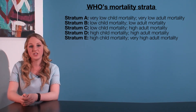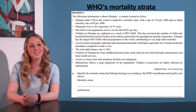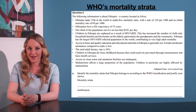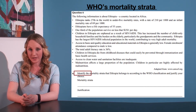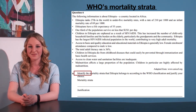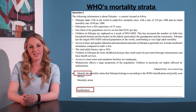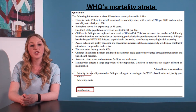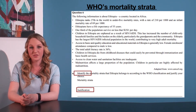A question on the mortality strata may look something like this one from the 2010 Vika exam. As you can see, the question has two parts. First, you need to identify the mortality stratum to which Ethiopia belongs based on the given information. Then, you need to justify that choice, again based on the given information. The question is worth three marks in total — one mark for the identification and two marks for the justification.